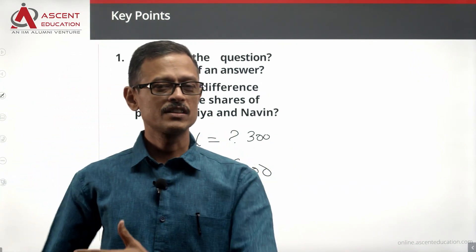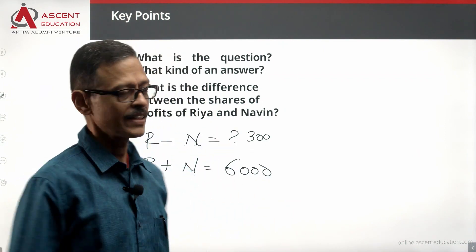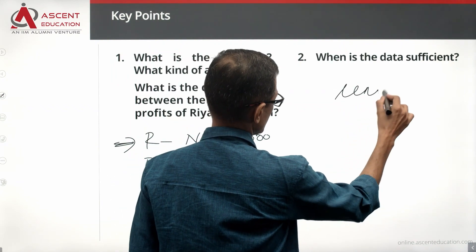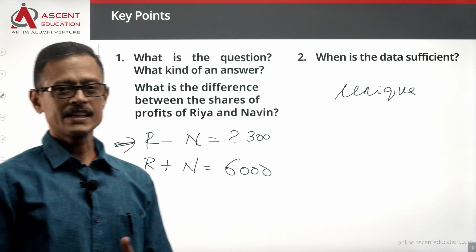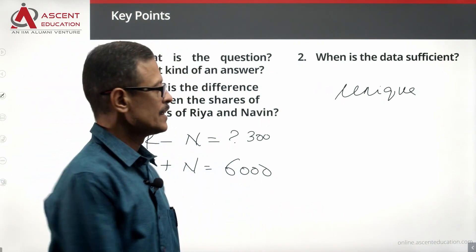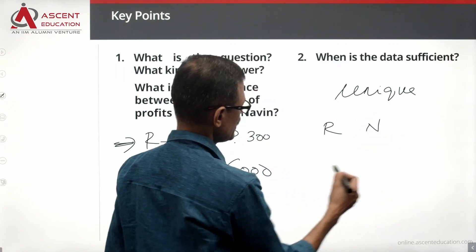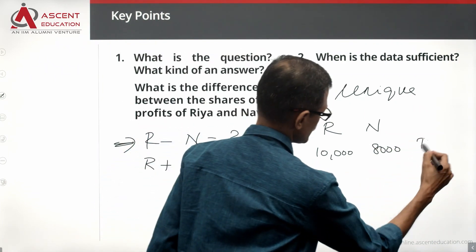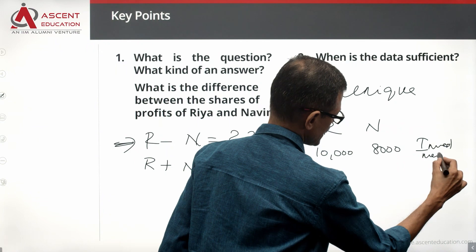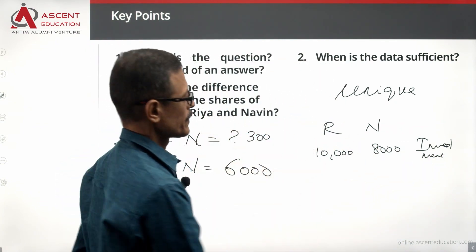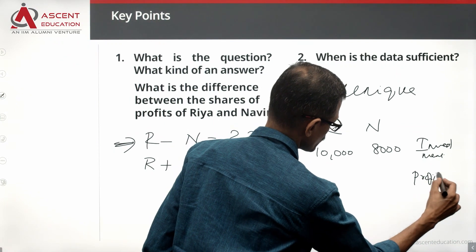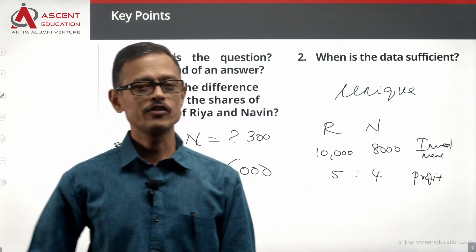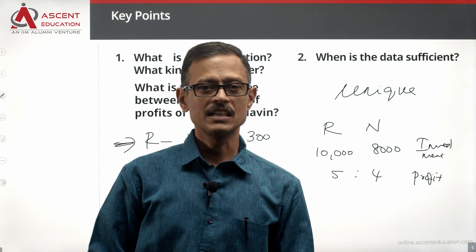Typically, when it comes to profit sharing in a partnership, if two people — Rhea and Navi — invested 10,000 rupees and 8,000 rupees respectively, they will divide their profit in the ratio of 10,000 to 8,000, which simplifies to 5 to 4. Whatever is the ratio of their investments, that will be the same ratio in which they divide their profits.